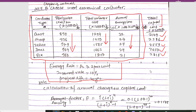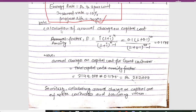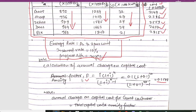The energy rate is given as 7.24 per unit, the interest rate is 10%, and the project life is 20 years. First, we will calculate the energy factor, then proceed to calculations of annual charge and capital cost for each conductor.